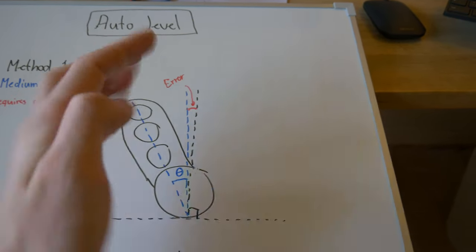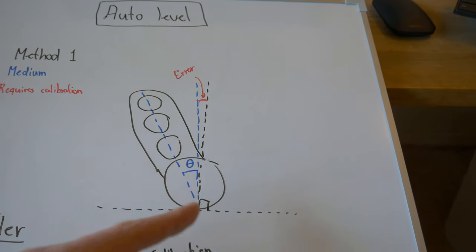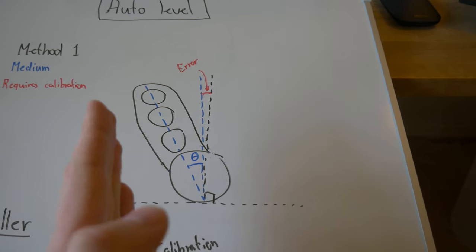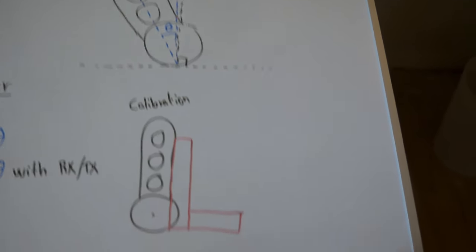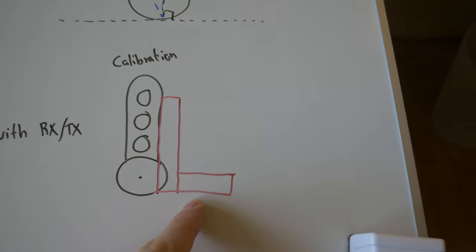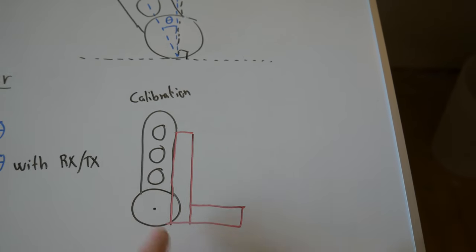When the vehicle is standing perfectly straight up, the IMU is going to be slightly tilted in some way. The blue line is supposed to represent the offset. This means that whenever the vehicle thinks it's standing straight up, it's actually standing at a slight angle.